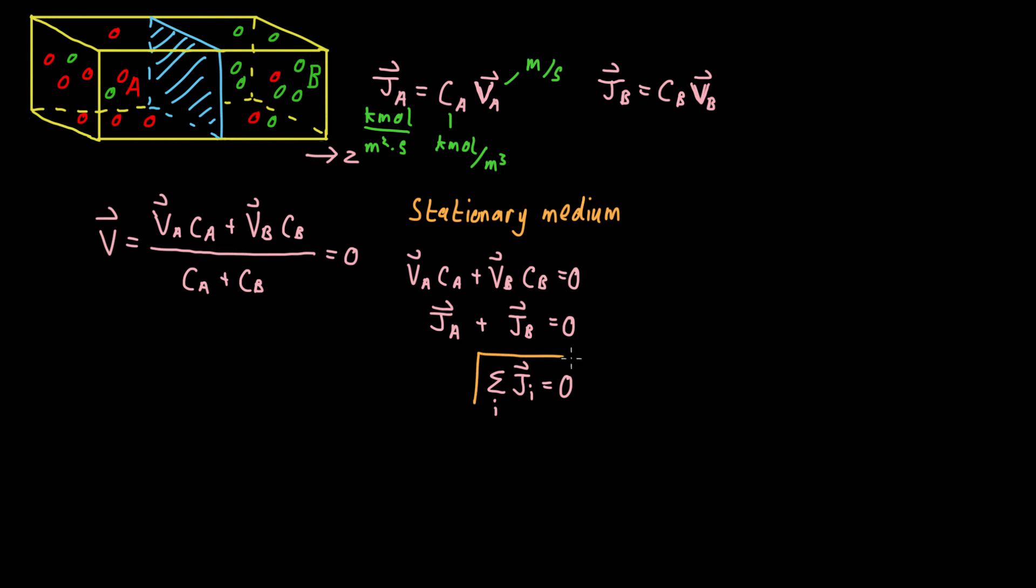The total flux, summing the total flux, sums to zero for a stationary medium. And by stationary medium, I mean that this velocity, the total velocity of the system, is equal to zero.